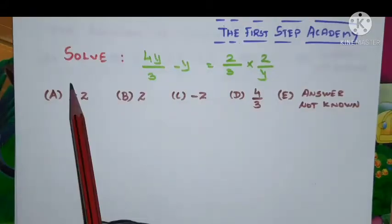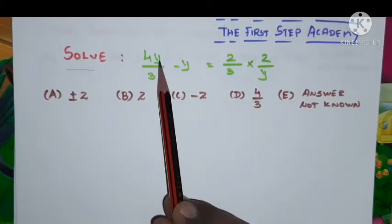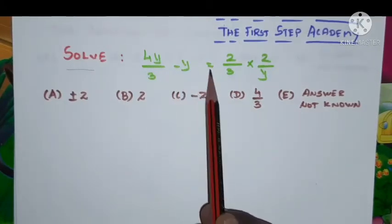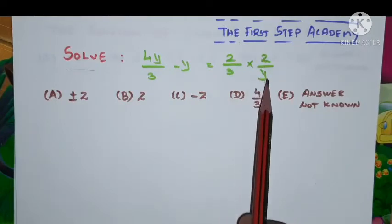Okay, the given problem is Solve: 4y by 3 minus y which is equal to 2 by 3 into 2 by y.